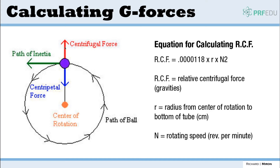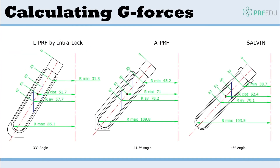When we look at centrifuges, we have different devices: the Intro Lock, the A-PRF, and the Salvin. It's very simple to actually calculate the g-forces once you have the relevant values, and I'm going to go ahead and do an example so people can see how it's done.